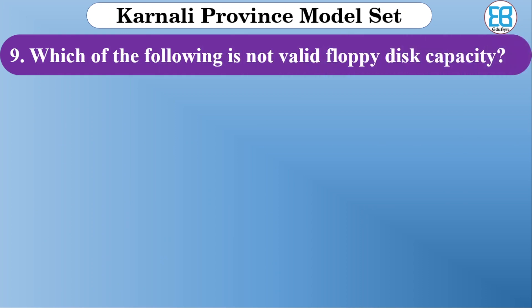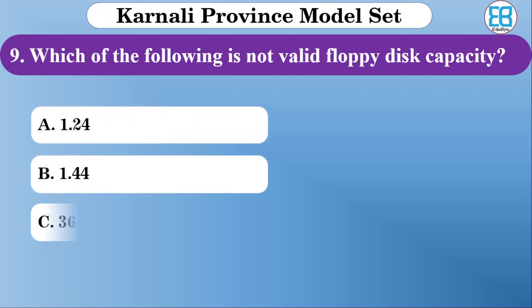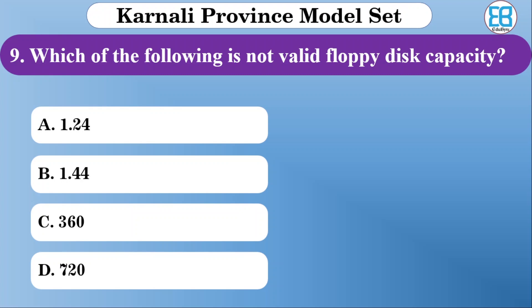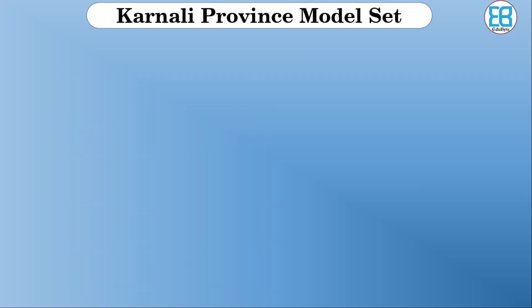Which of the following is not a valid disk capacity? The options are 1.2, 1.44, 360, and 720. The correct option — meaning the invalid one — is 1.24, which is not a valid disk capacity.